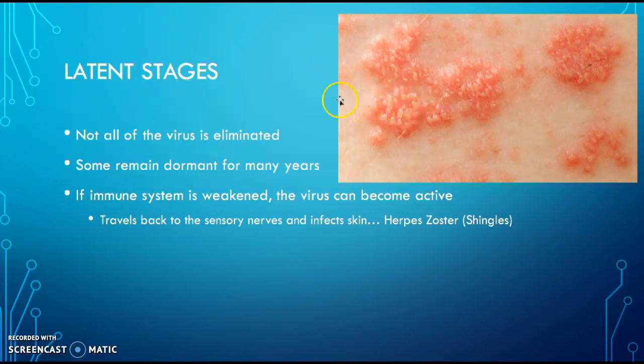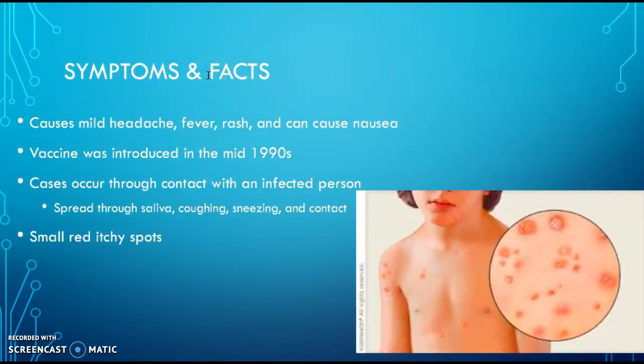This image can show you what shingles look like. A few symptoms and facts about chickenpox: they're going to be small red blisters that can cause mild headaches, rashes, and fevers, and sometimes nausea. Fevers are most common in adults. This disease is caused by the varicella zoster virus, also called VZV. It's rare to have it more than once.